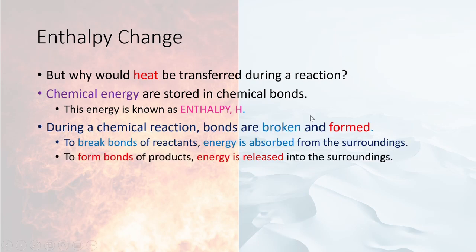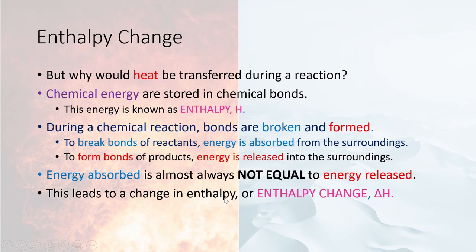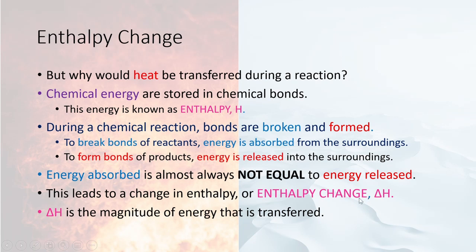During a chemical reaction, chemical bonds are both broken and formed. The chemical bonds of reactants are broken, which requires energy absorbed from the surroundings. During the formation of bonds in the products, energy is released into the surroundings. Although energy is absorbed during bond breaking, it seems to be cancelled out by the energy released during bond formation. However, in the vast majority of chemical reactions, the magnitude of energy absorbed is almost always not equal to the magnitude of energy released. This imbalance leads to a change in enthalpy, or enthalpy change, denoted by delta H — and the value of delta H is the magnitude of energy that is transferred.